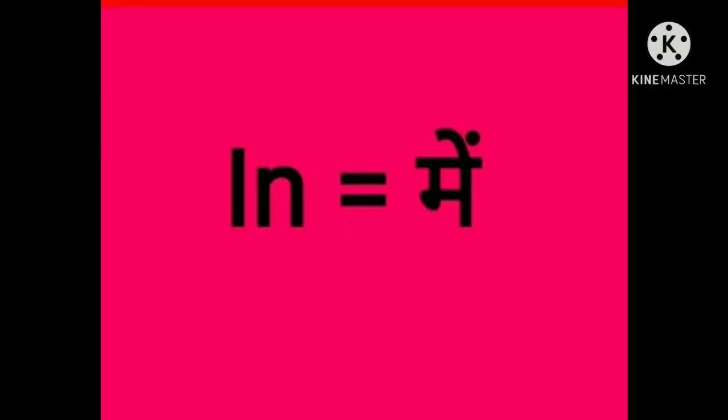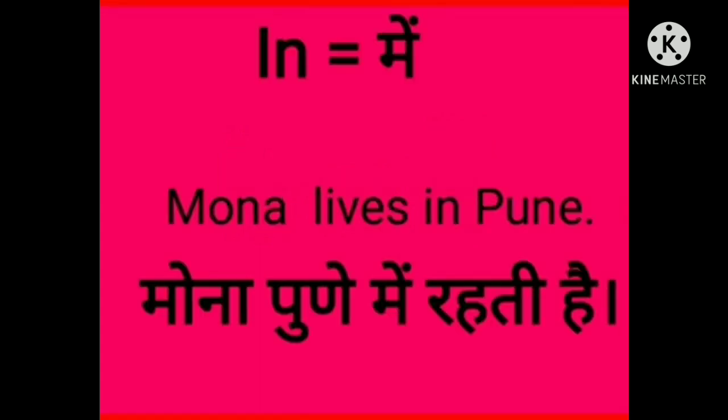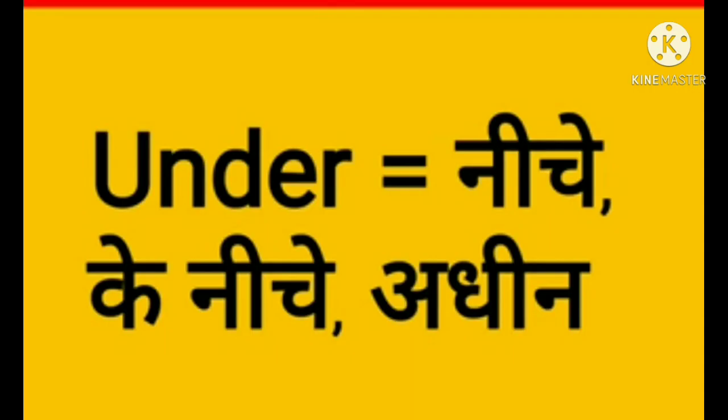The next preposition is 'in'. In ka matlab hota hai 'andar' (means inside). Simply, as we say, students are sitting in the classroom. Example: Mona lives in Pune — Mona Pune mein rehti hai.